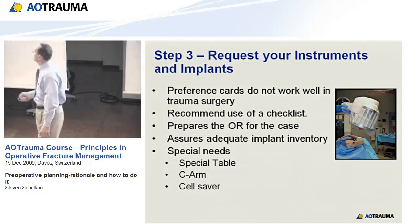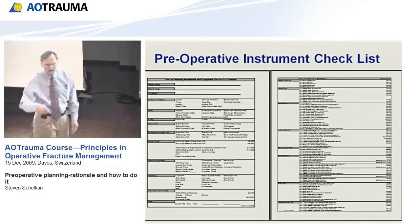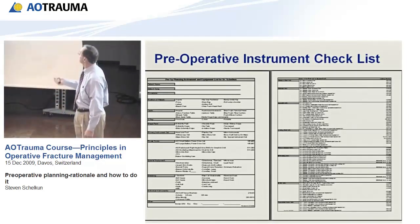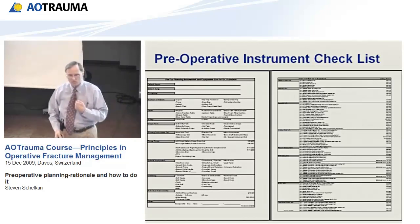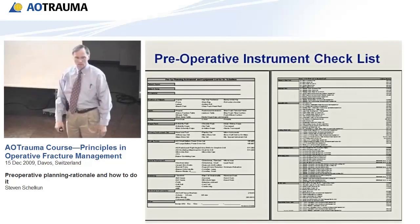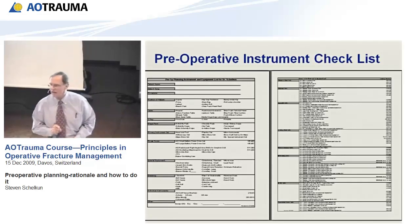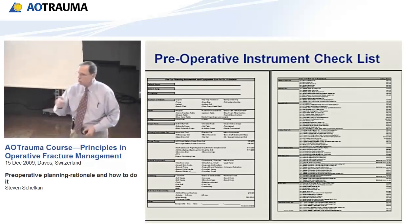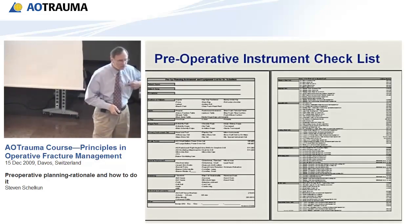When you get in the operating room, this is an example of the checklist I developed back in 1991. It's complex — these are every instrument set my hospital has for fracture surgery. I take a highlighting pen, starting with position, special instruments, power tools, and every instrument I want. When you're done, there are just a few things checked. I give this to the operating room and they know exactly what I want: pull what I ask you to pull, and don't pull anything else.